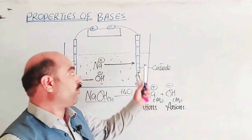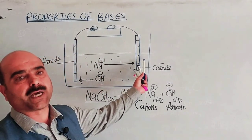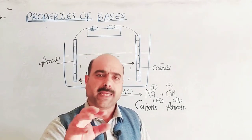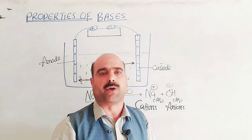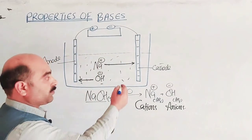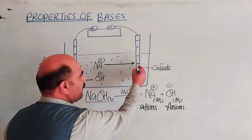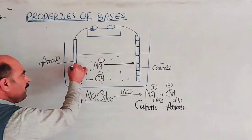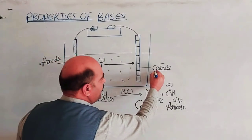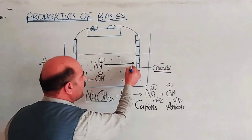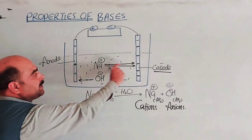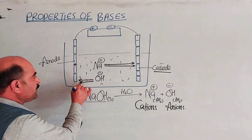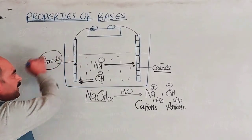The electrode that is negatively charged is called the cathode, and the positively charged electrode is called the anode. The cathode is negative — an easy trick to remember is that cations move to the cathode. The anode is positive. Students are often confused by this, but cathode is negative and anode is positive.